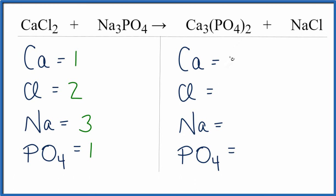So going on the product side, I have three calciums, and then let's just go in the same order. I have one chlorine, one sodium, and then I have the phosphate here. And this two applies to the whole thing, so I have two phosphates. So I'm going to put a two here.